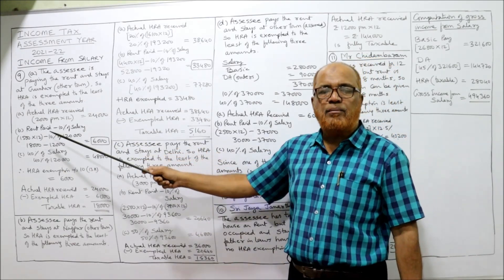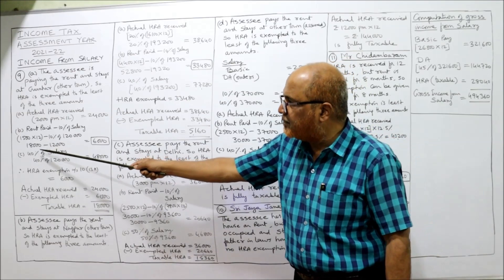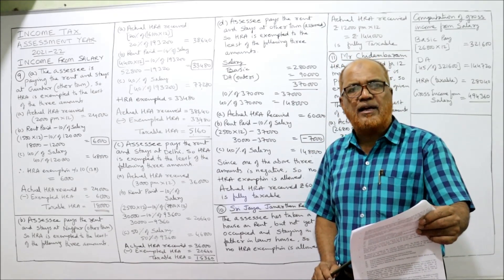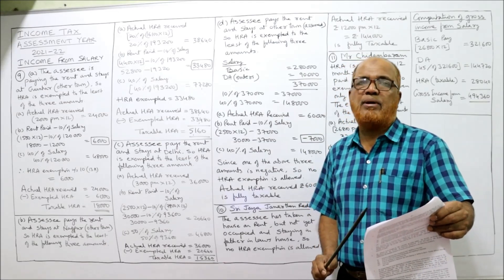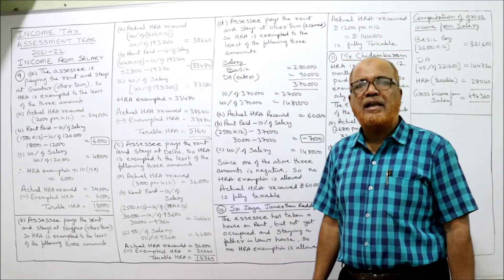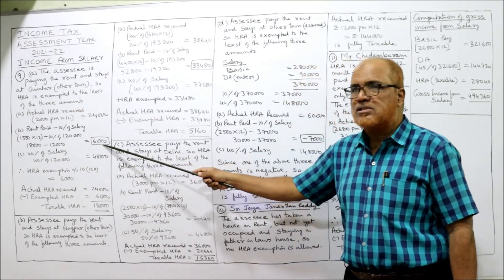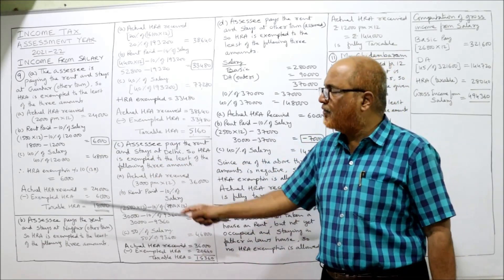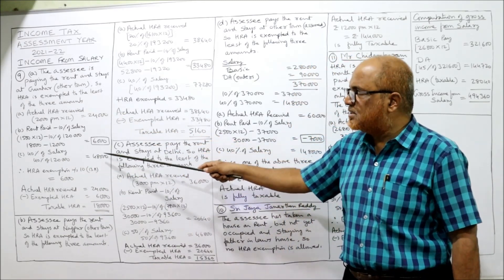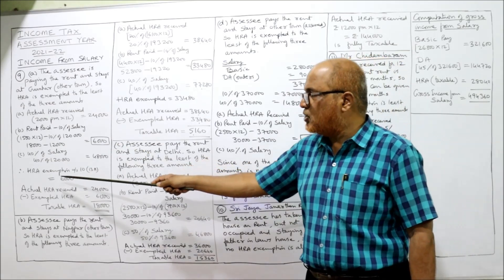Rent paid minus 10% of salary: rent paid is ₹1,500 × 12 = ₹18,000. Salary means only basic — DA is not entering for retirement benefit — so basic is ₹10,000 × 12 = ₹1,20,000. 10% of ₹1,20,000 = ₹12,000. So ₹18,000 − ₹12,000 = ₹6,000. Third: 40% of salary (other town): 40% of ₹1,20,000 = ₹48,000. Least among the three is ₹6,000, so exempted HRA = ₹6,000.